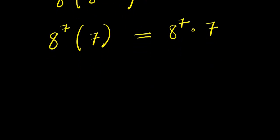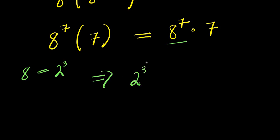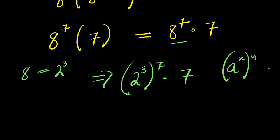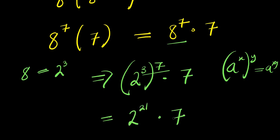From here, remember 8 equals 2 to the power of 3. So we replace 8 with 2 to the power of 3, meaning we have 2 to the power of 3, raised to the power of 7, times 7. And using the rule: a to the power of x raised to the power of y equals a to the power of x times y — 3 times 7 is 21 — so we have 2 to the power of 21, times 7.